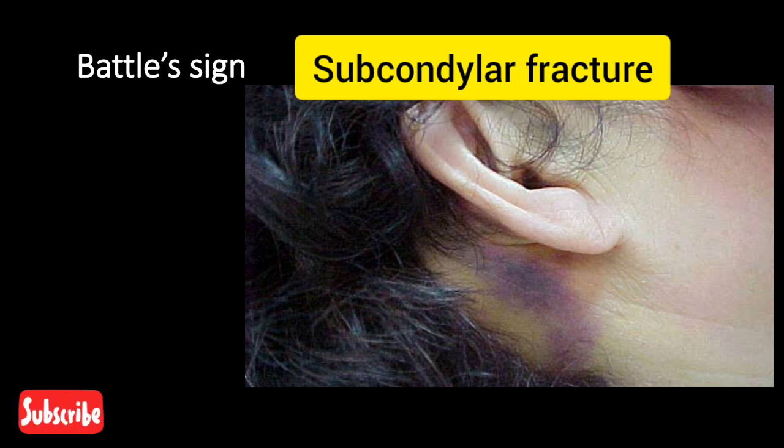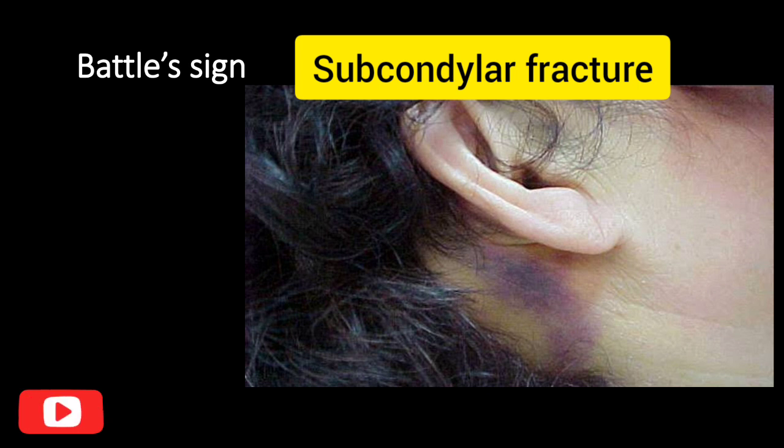Battle's sign: it is seen in subcondylar fracture and fractures involving the base of the skull. It is characterized by ecchymosis in the post-auricular region over the mastoid process.